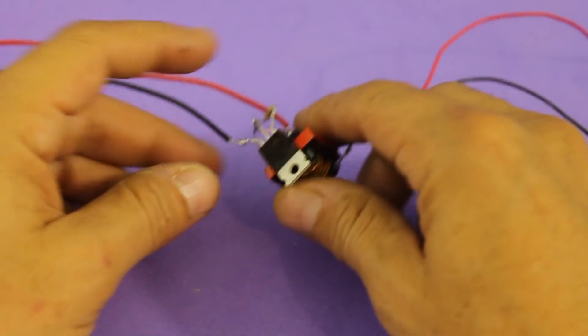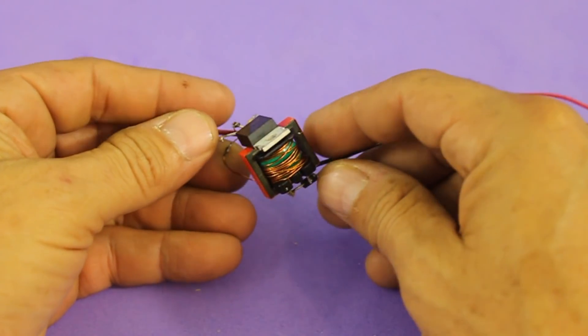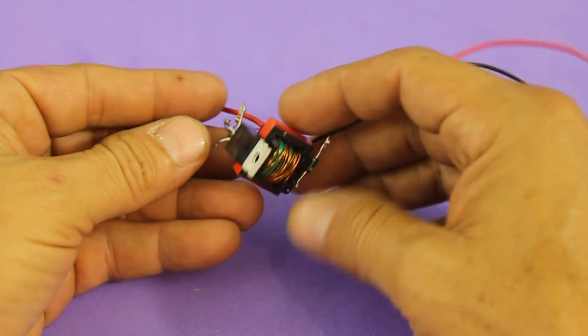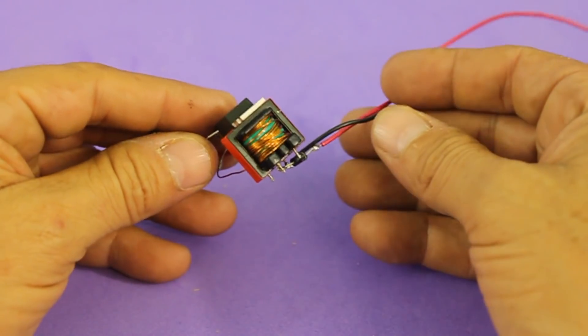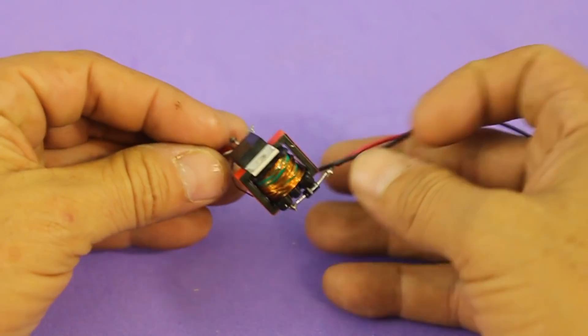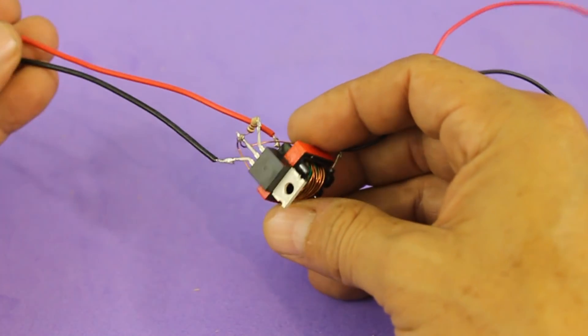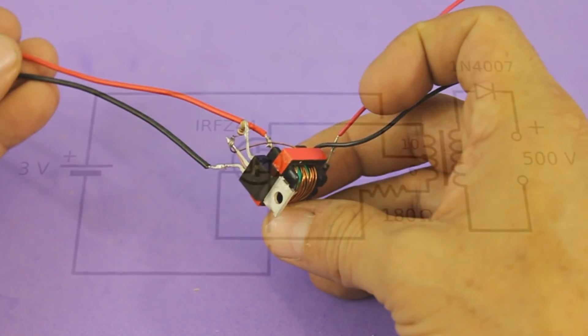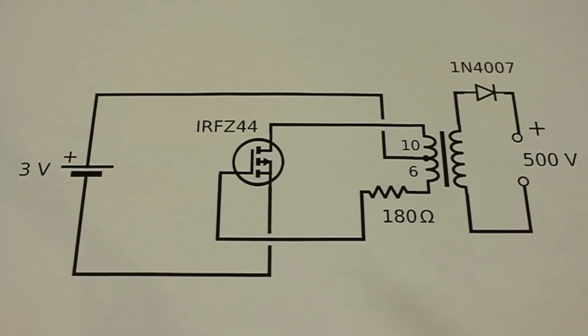Hello, today I want to show you this small voltage booster that can have an output of around 500 volts with an input of only 3 volts. This is the diagram we need: a power supply of course, a MOSFET...